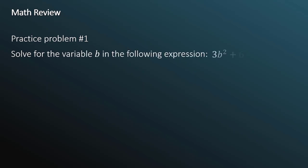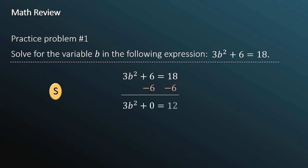Practice problem number one. Solve for the variable b in the following expression: 3b² + 6 = 18. We want to isolate b. Let's begin. Subtract 6 from both sides. This leaves us with 3b² = 12. We want to isolate b. So the next step requires that we divide both sides by 3. And this leaves us with b² = 4. To isolate b, we need to take the square root of both sides. And whenever we take the square root, we must remember that the answer is a plus or minus. You can have a positive root or a negative root. Because in this particular example, 2² = 4 and negative 2² also equals 4. So our answer is b = ±2.